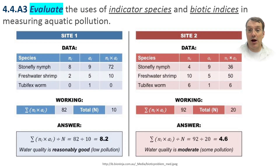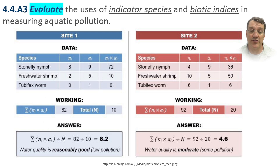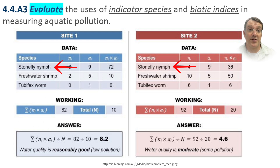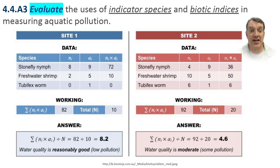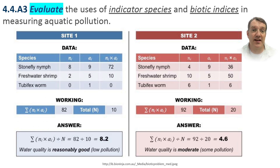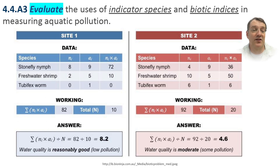The use of indicator species provides a powerful biological tool for assessing water quality. Different aquatic organisms have varying tolerances for pollution, making them natural indicators of water conditions. Stonefly nymphs are particularly sensitive to pollution and require high levels of dissolved oxygen. Finding them in a water body strongly suggests a clean, well-oxygenated condition with minimal pollution. Their presence typically indicates a biotic index value below 4.0, representing excellent water quality.